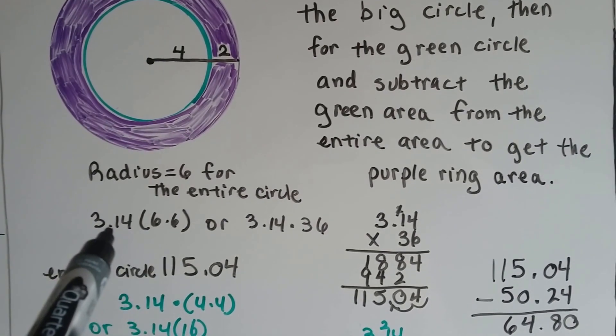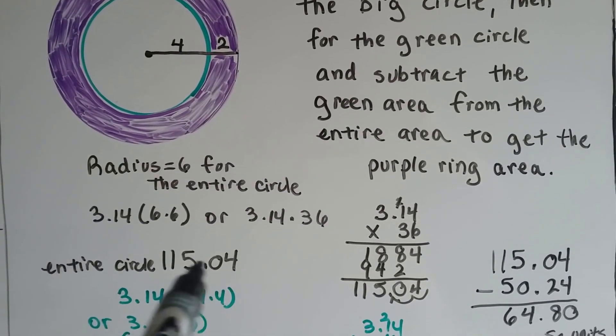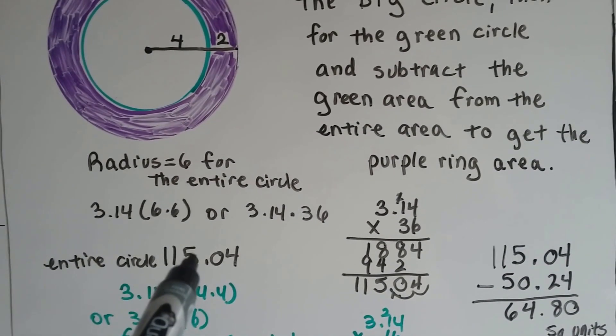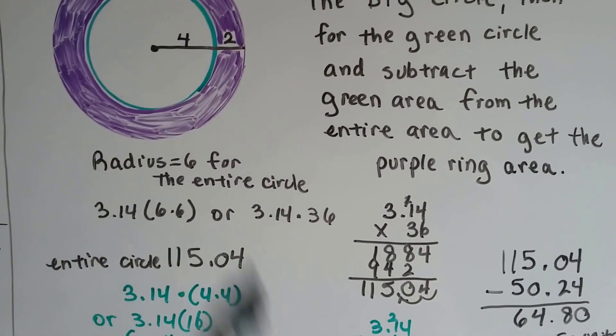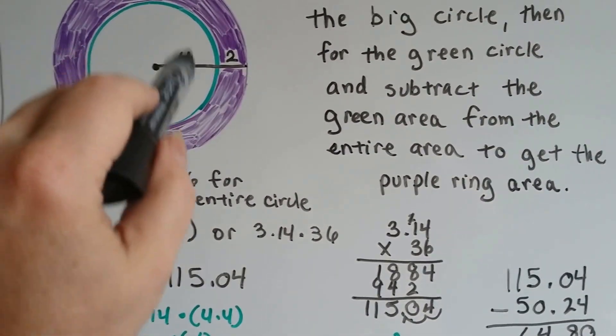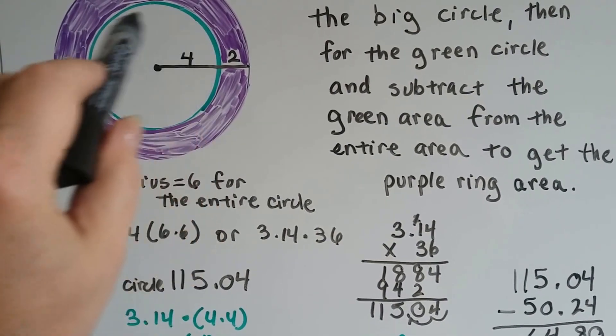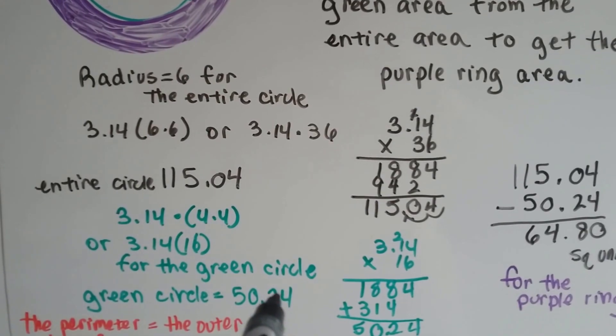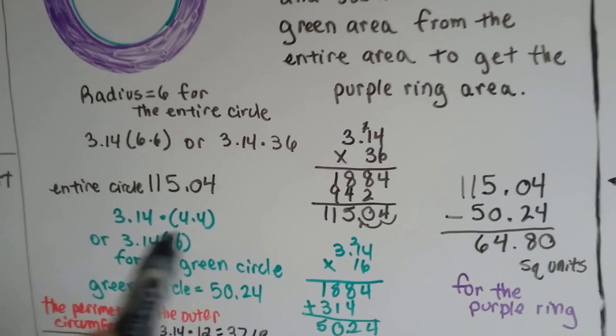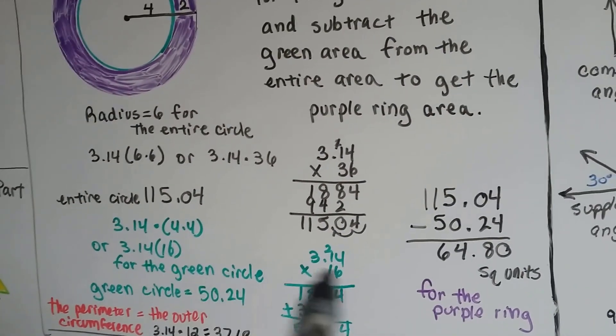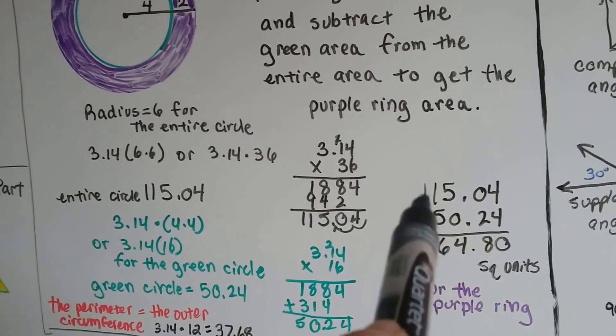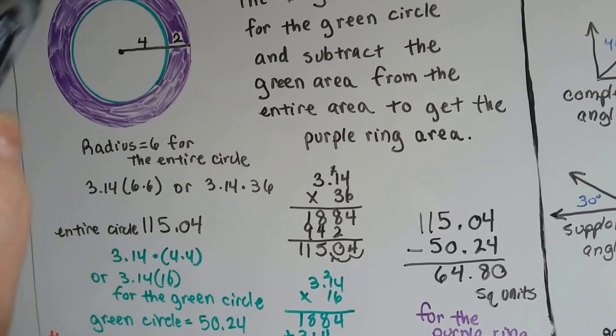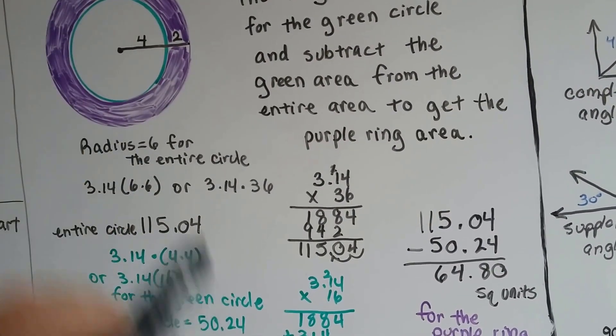We get 3.14 times 6 times 6 or times 36. And then, doing our math, our multiplication, we find out it's 113.04 units. Then, we use the radius of 4 for the inner green and white circle, and we find out that its area is 50.24. After plugging it into the formula...